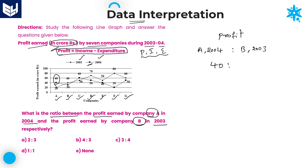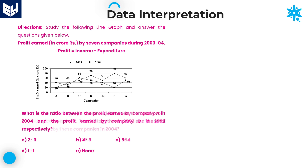I don't need to write 'crores' since it appears in both values and will cancel. Company B in 2003 — the rhombus shape — is also 40. Therefore the required ratio is 40 to 40, which equals 1 is to 1. Looking at the options, option D is the right answer for this question: 1 is to 1.